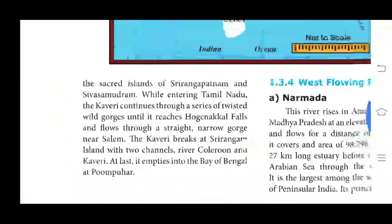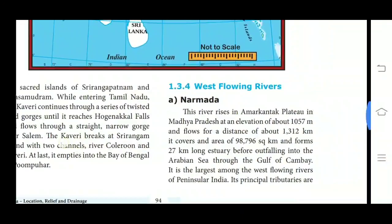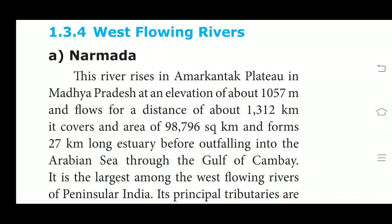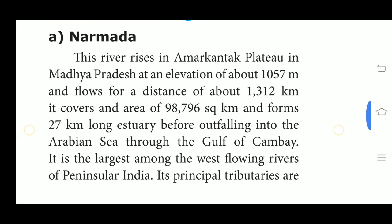West flowing rivers — Narmada. This river rises in the Amarkantak Plateau in Madhya Pradesh at an elevation of about 1,057 m and flows for a distance of about 1,312 km. It covers an area of 98,796 km² and forms a 72 km long estuary before outfalling into the Arabian Sea through the Gulf of Khambhat. It is the largest among the west flowing rivers of Peninsular India.